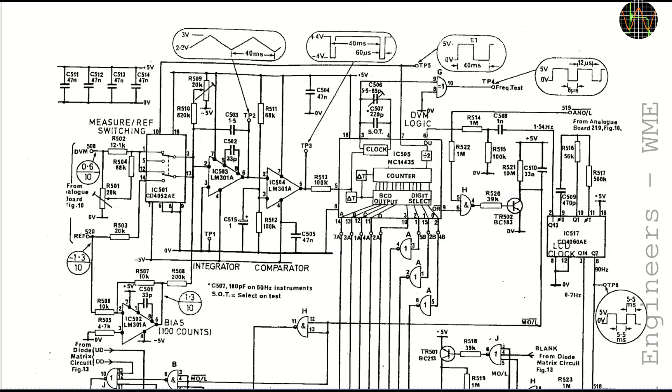The digital part looks quite complex. Basically, there is an integrated 3.5 digit DVM chip here, an MC14435 which is of course long obsolete. That chip produces a multiplexed output consisting of 4 signals showing the value of a digit in BCD code and 4 other signals to indicate which digit is being sent.